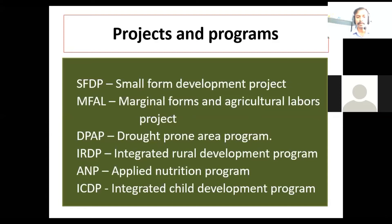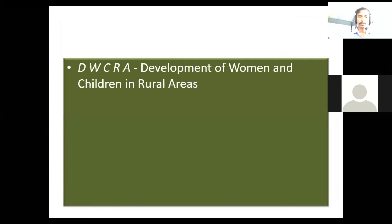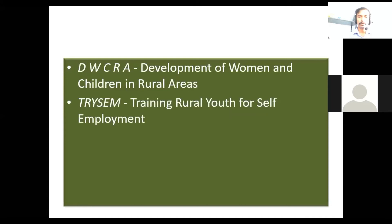ICDP is a program that integrates child health, education, etc. Then DWCRA — Development of Women and Children in Rural. Then TRYSEM — Training Rural Youth for Self-Employment.